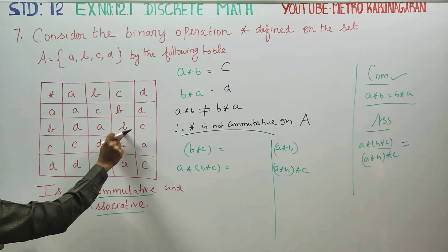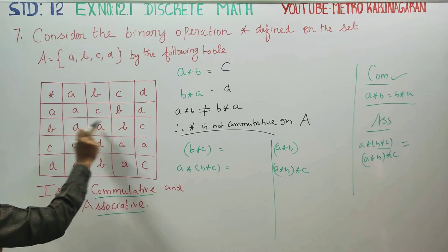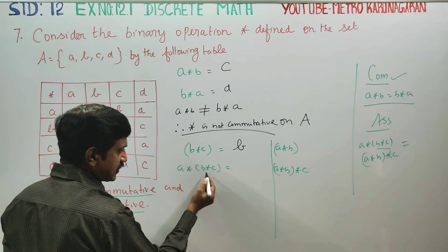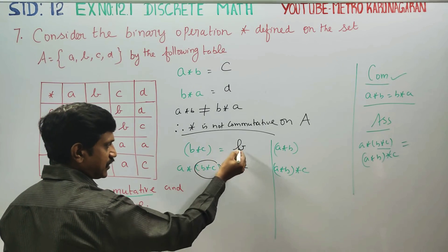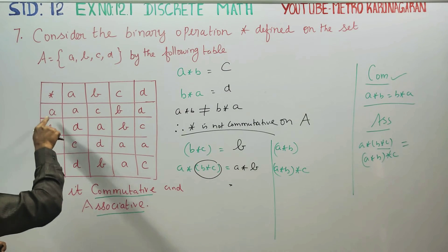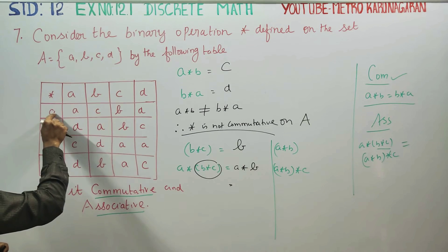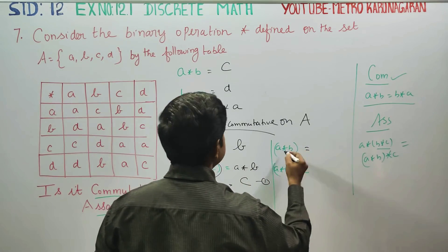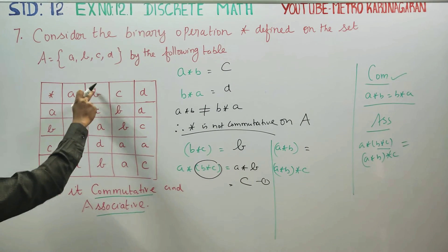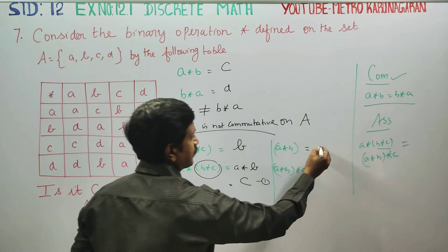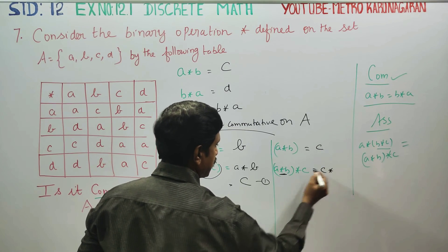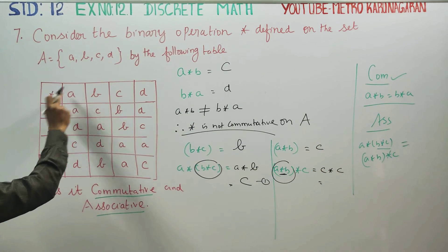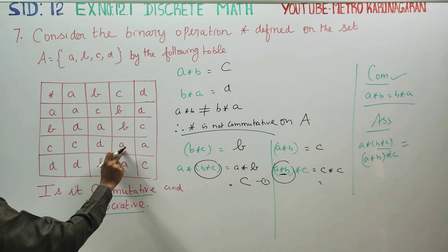Computing b★c from the table, the answer is B. Then a★(b★c) gives a★B. Meanwhile, computing a★b gives answer C. Then C★c is computed, and the answer is A. This gives result 2.